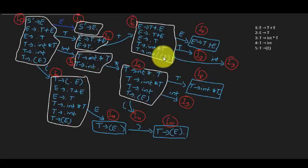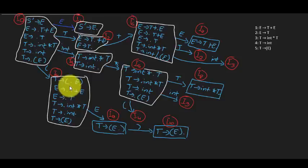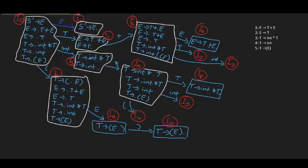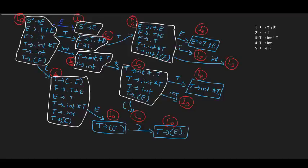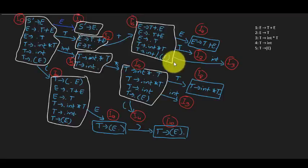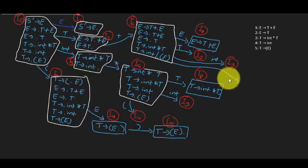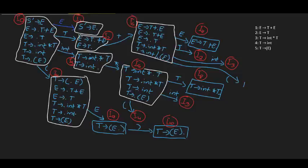When we move the dot after open parenthesis in yet another state, we again get state I4. So on input open parenthesis, we just point to state I4.